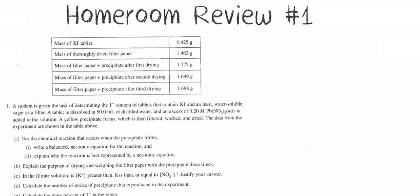So the student is given the task of determining the I- content of tablets that contain KI and an inert water-soluble sugar as a filler. Maybe I don't understand what that means, maybe I do. Basically it's a tablet that has sugar that's holding some potassium iodide in it. The tablet is dissolved in 50 ml of distilled water and an excess of 0.2 molar lead nitrate, so I have more than I need, is added to the solution.